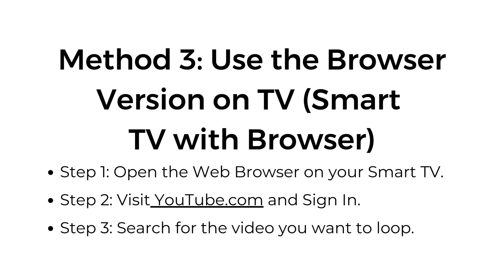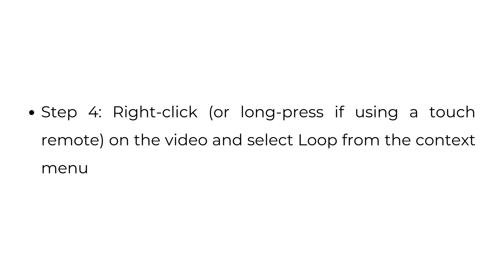Method three: use the browser version on TV, for smart TVs with a browser. Step one, open the web browser on your smart TV. Step two, visit youtube.com and sign in. Step three, search for the video you want to loop. Step four, right-click or long-press if using a touch remote on the video, and select loop from the context menu.